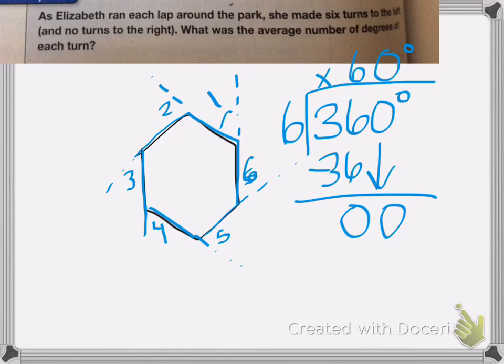Now it's not exact because we don't know what this park looks like. But on average, she turned about 60 degrees. Okay, and that's all, good luck on your homework.